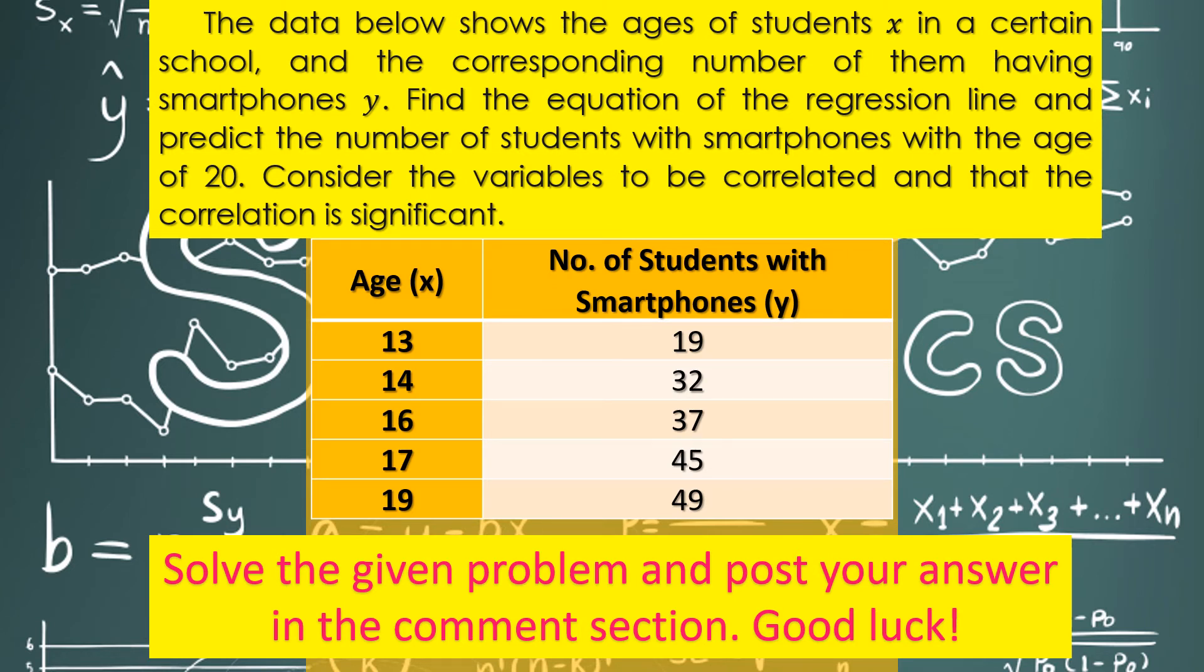The data shows the ages of students x in a certain school and the corresponding number of them having smartphones y. Find the equation of the regression line and predict the number of students with smartphones with the age of 20. Consider the variables to be correlated and that the correlation is significant. We have ages 13 to 19 and number of students with smartphones from 19 up to 49.